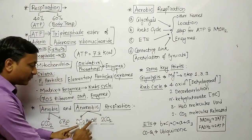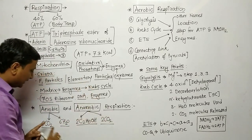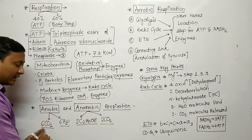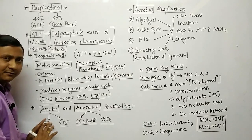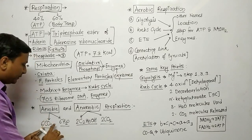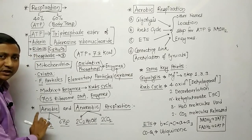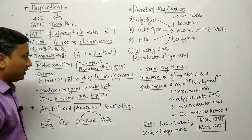So to summarize end products: anaerobic gives ethanol and carbon dioxide, while aerobic gives carbon dioxide and water. We generally prefer aerobic respiration. So the end products of respiration in humans are CO2 and water.